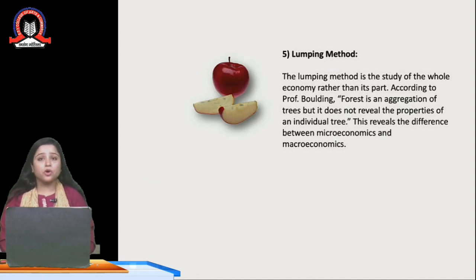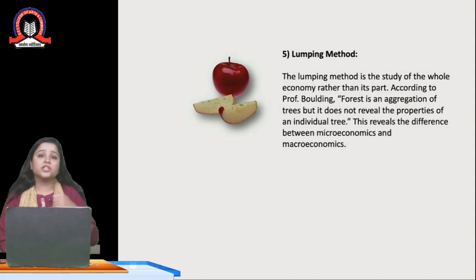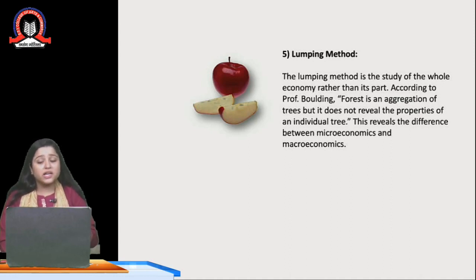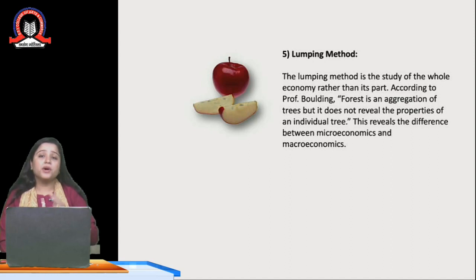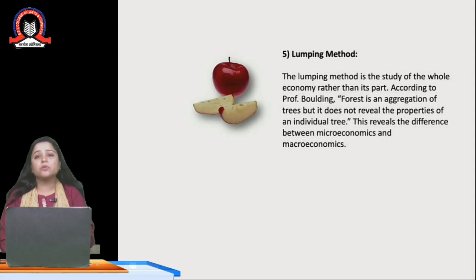The next feature of macroeconomics is the lumping method. In microeconomics, we use the slicing method, because there we study only partial things and not aggregates — we divide the entire economy and split it into small parts. But macroeconomics deals with the lumping method, as we study the whole economy rather than its parts. For example, a forest is an aggregation of trees, but it does not reveal the properties of an individual tree — here we consider the entire forest, not the individual tree. This reveals the difference between micro and macroeconomics: microeconomics uses the slicing method, while macroeconomics uses the lumping method.